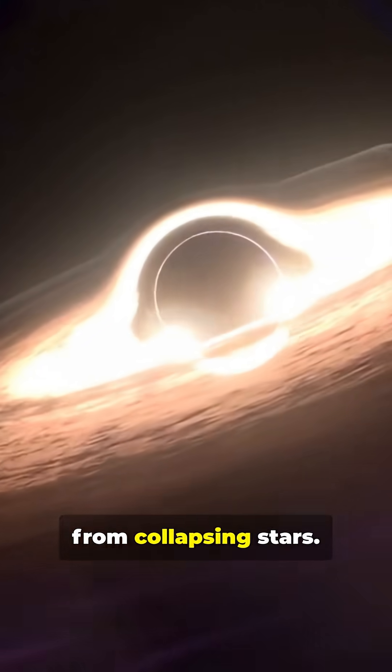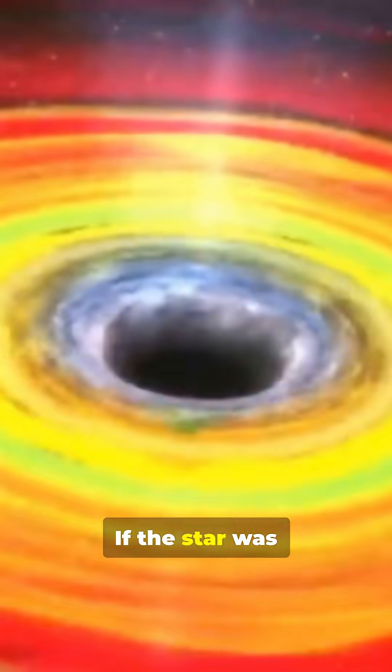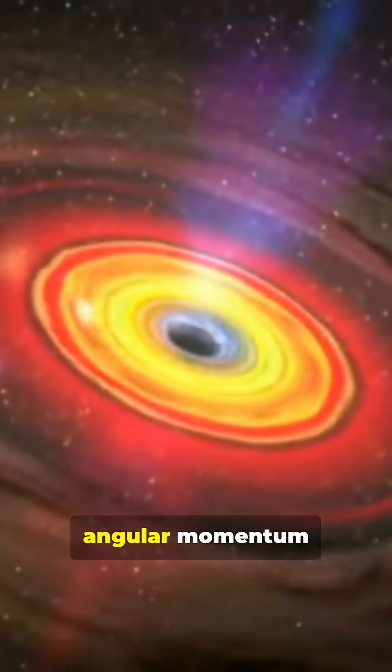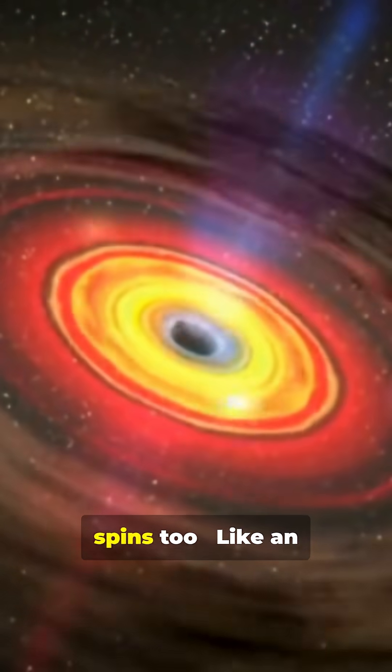Black holes form from collapsing stars. If the star was spinning before collapse, conservation of angular momentum means the black hole spins too, like an ice skater pulling in their arms.